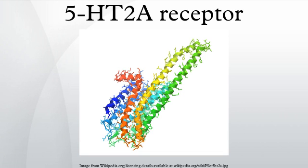Physiological processes mediated by the receptor include CNS neuronal excitation, behavioral effects, learning, anxiety, smooth muscle contraction, vasoconstriction/vasodilation, and platelet aggregation. Activation of the 5-HT2A receptor with DOI produces potent anti-inflammatory effects in several tissues including cardiovascular and gut. Other 5-HT2A agonists like LSD also have potent anti-inflammatory effects against TNF-alpha induced inflammation. Activation of the 5-HT2A receptor in the hypothalamus causes increases in hormonal levels of oxytocin, prolactin, ACTH, corticosterone, and renin.